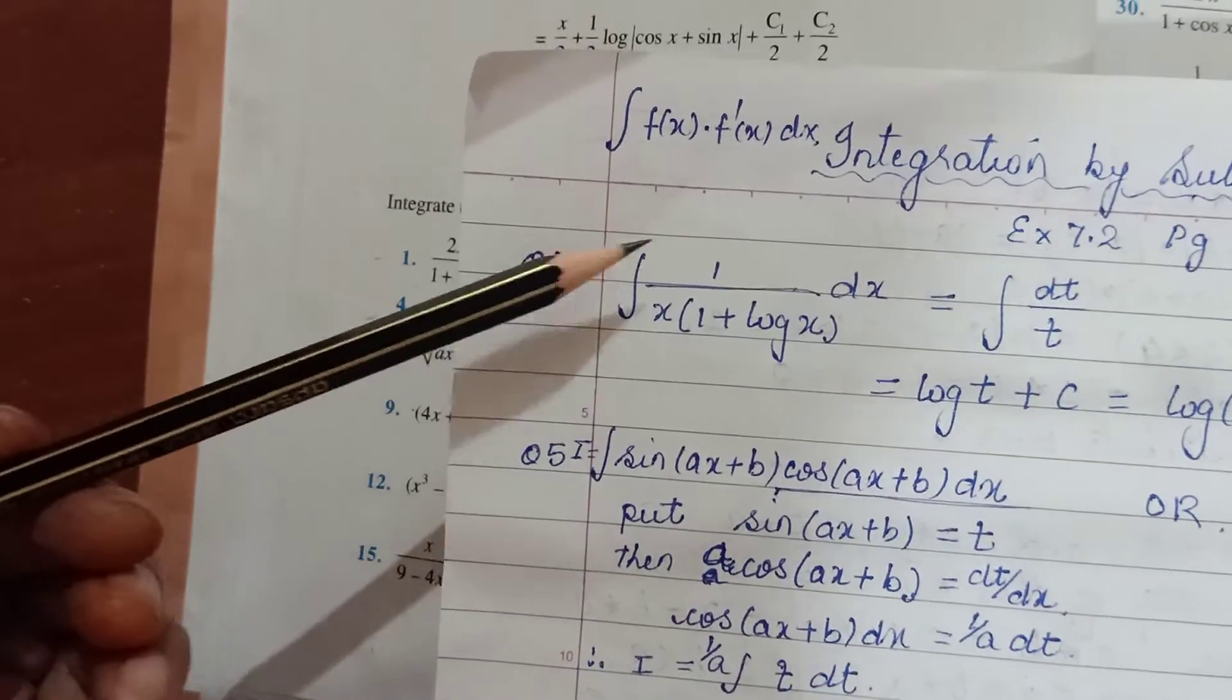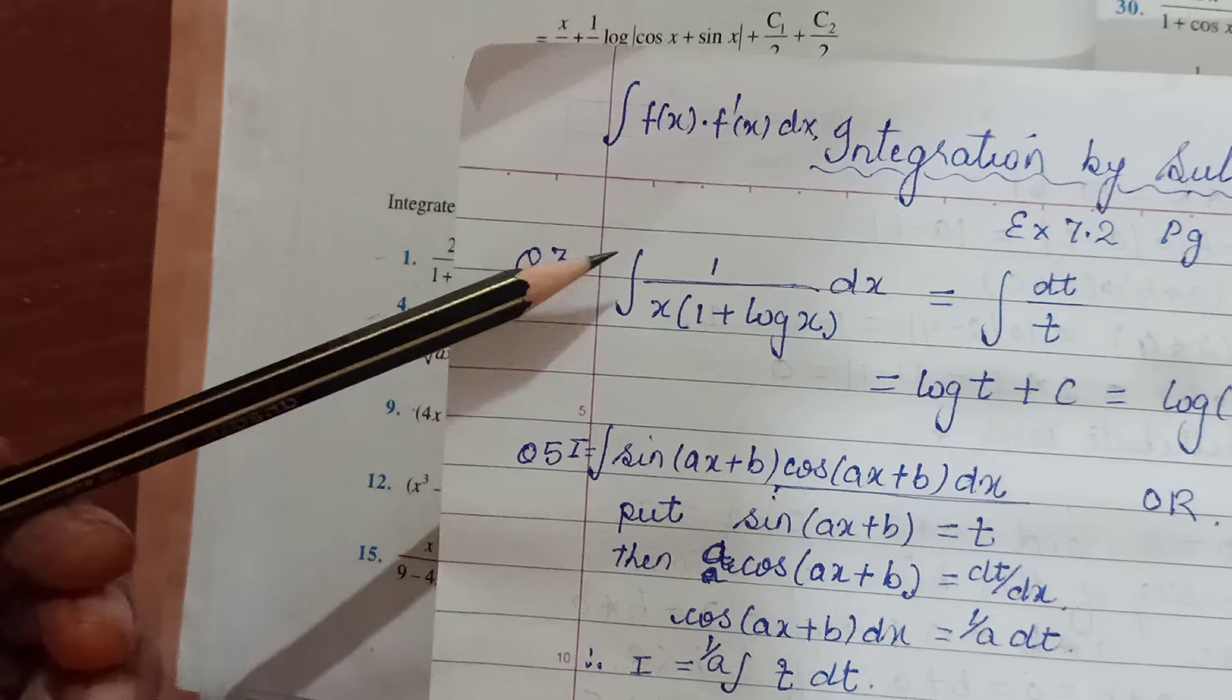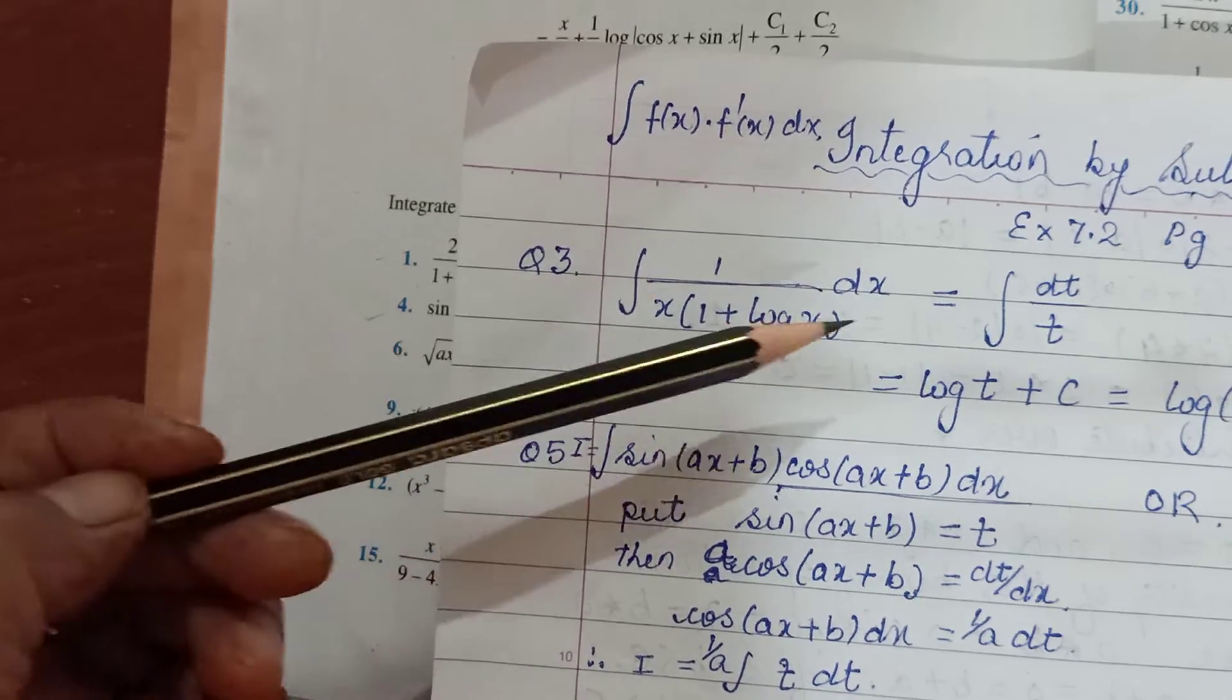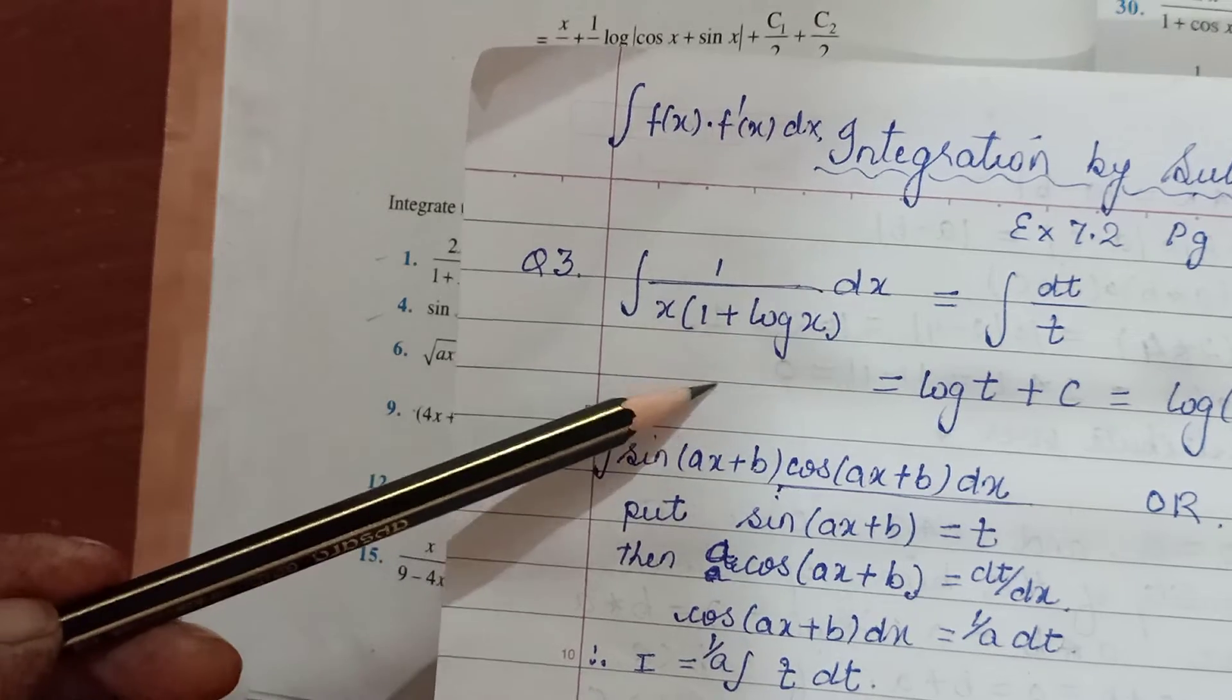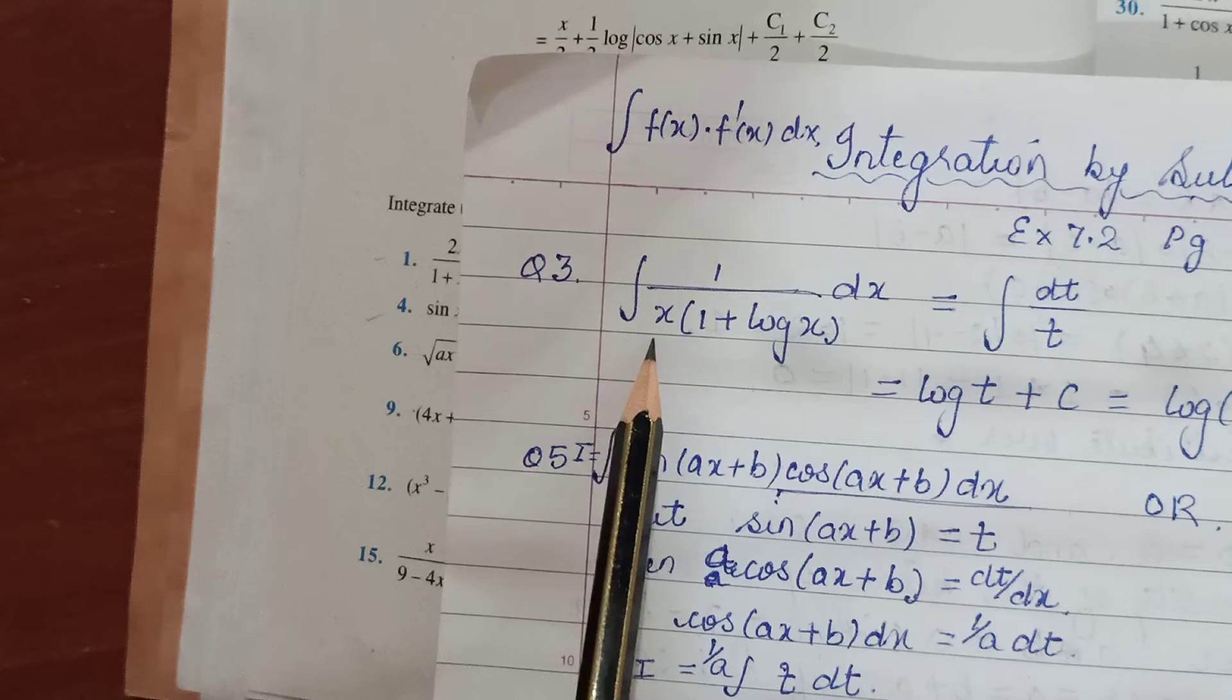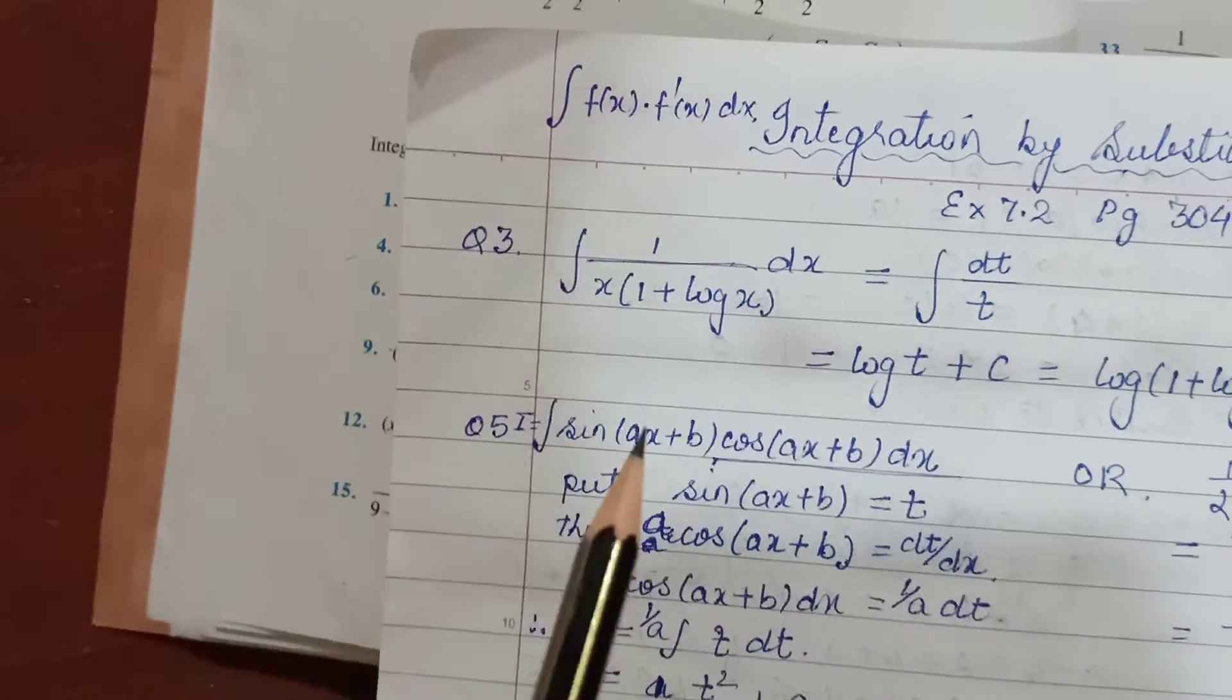Integrate likha hai but aap is ko symbol dikhao ga, of course that is your sign of integration and this is with respect to x. So we need to put that integration sign and dx out there where the function was. What I've done is from both these I've taken x common.